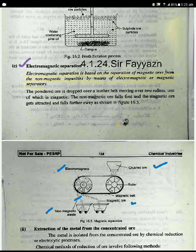Electromagnetic Separation is based on the separation of magnetic ores from non-magnetic impurities. Now we will see the procedure. First we will see the diagram.